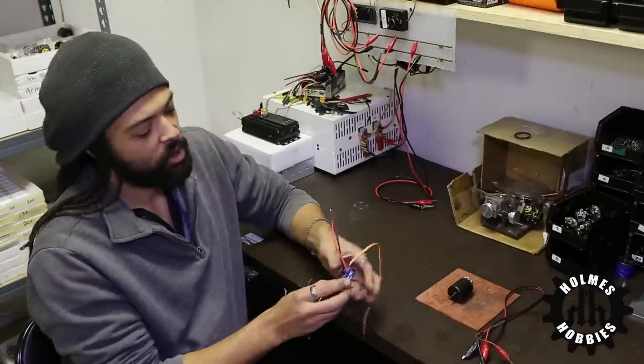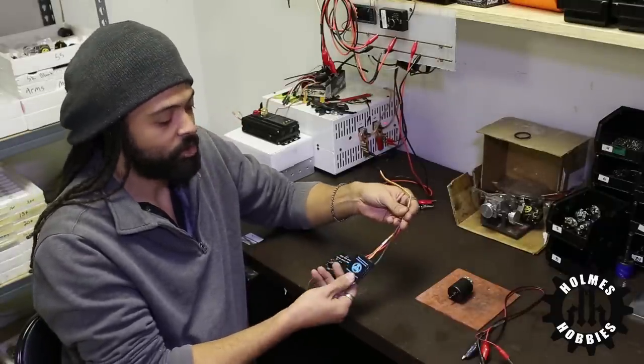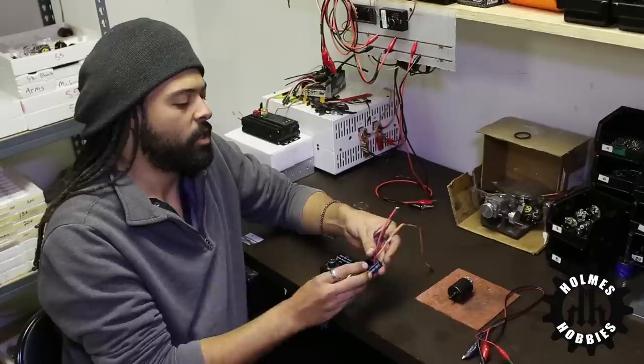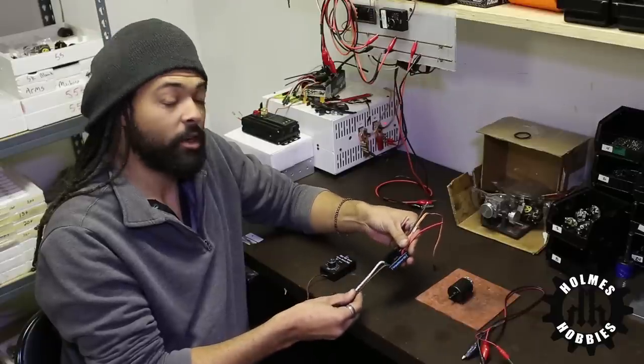When you get a Torquemaster BRXL or BRXL waterproof, it's going to look pretty much just like this when you get it out of the package. It comes with some connectors that you can use to wire it into your rig as well.